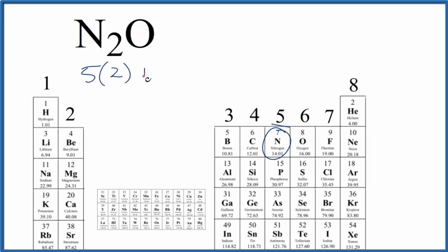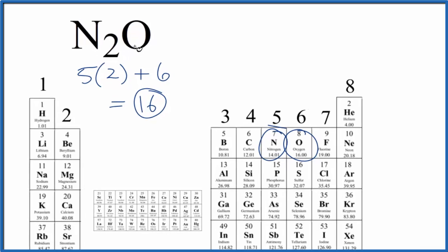We have two nitrogen atoms, and oxygen, group 16, sometimes called 6A, that has six. 10 plus 6, 16 total valence electrons for the N2O Lewis structure.